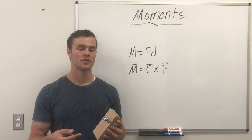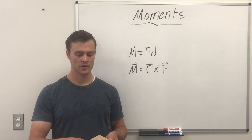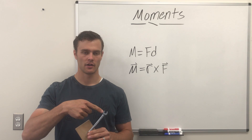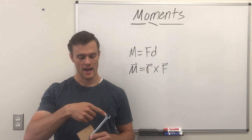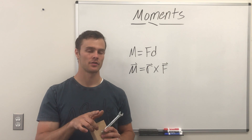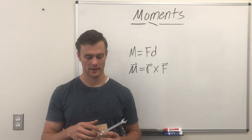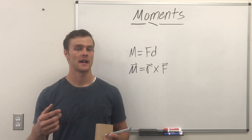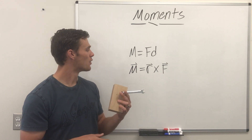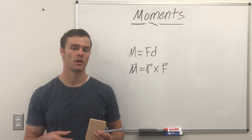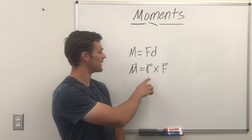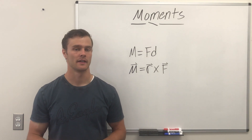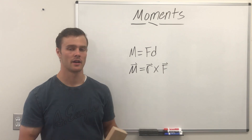The direction of a moment is perpendicular to the plane created by our force and our moment arm. So the wrench and my finger create a plane, and our moment is perpendicular to that plane — coming out 90 degrees from that plane at the axis of rotation. We can find that moment vector with both its direction and magnitude using the cross product of the moment arm and the force. It's important to note that the moment arm is first in this cross product and the force is second, otherwise you'll get the moment in the opposite direction.